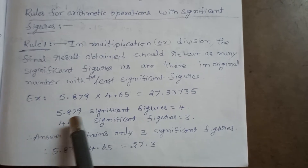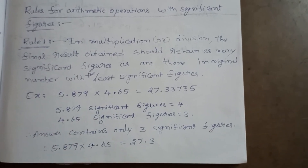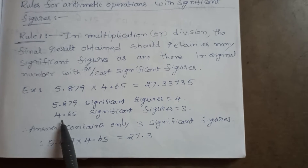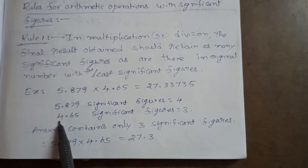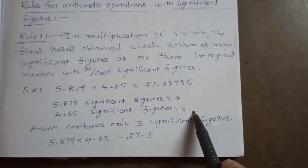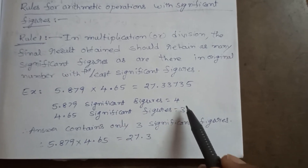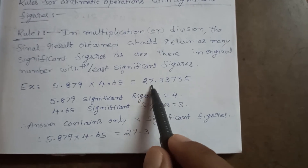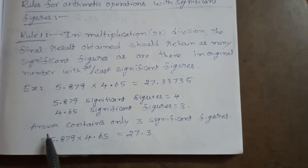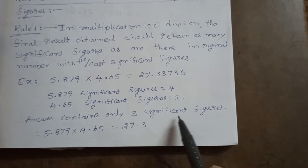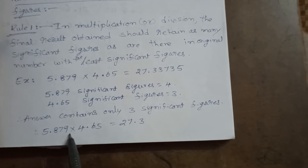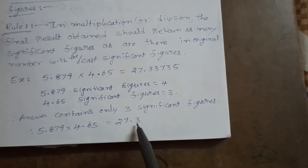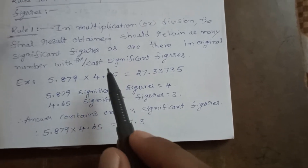5.879 has 4 significant figures (1, 2, 3, 4). The significant figures of 4.65 is 3. Between these two numbers, the least number is 3, so the answer should contain only 3 significant figures. Therefore, 5.879 × 4.65 = 27.3, which has only 3 significant figures.